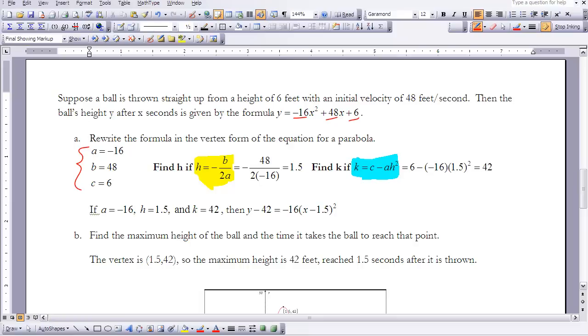I can go ahead and plug in my values. For b, I'm going to plug in 48, and 2 times a negative 16 for my a. That equals 1.5. Then for k, I have my value for c, which was 6, minus a negative 16 times 1.5 squared gave me a value of 42. Now I know my h is 1.5 and my k is 42. I can plug it into my equation. I now have taken my equation from standard form and put it into vertex form.